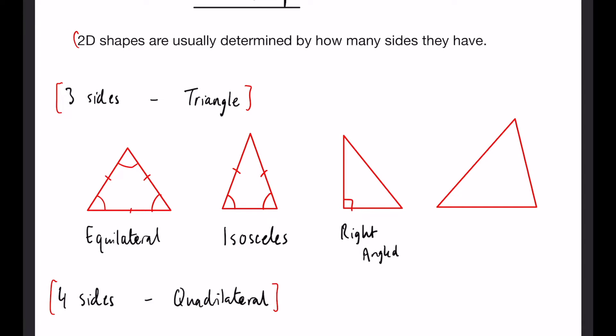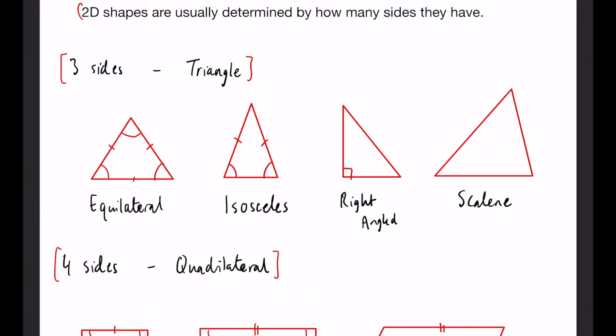Finally we have a triangle that doesn't have anything the same so none of the angles are the same, none of the sides are the same and this is a scalene triangle. Hopefully you've heard of all those before but that is all you need to know on those.